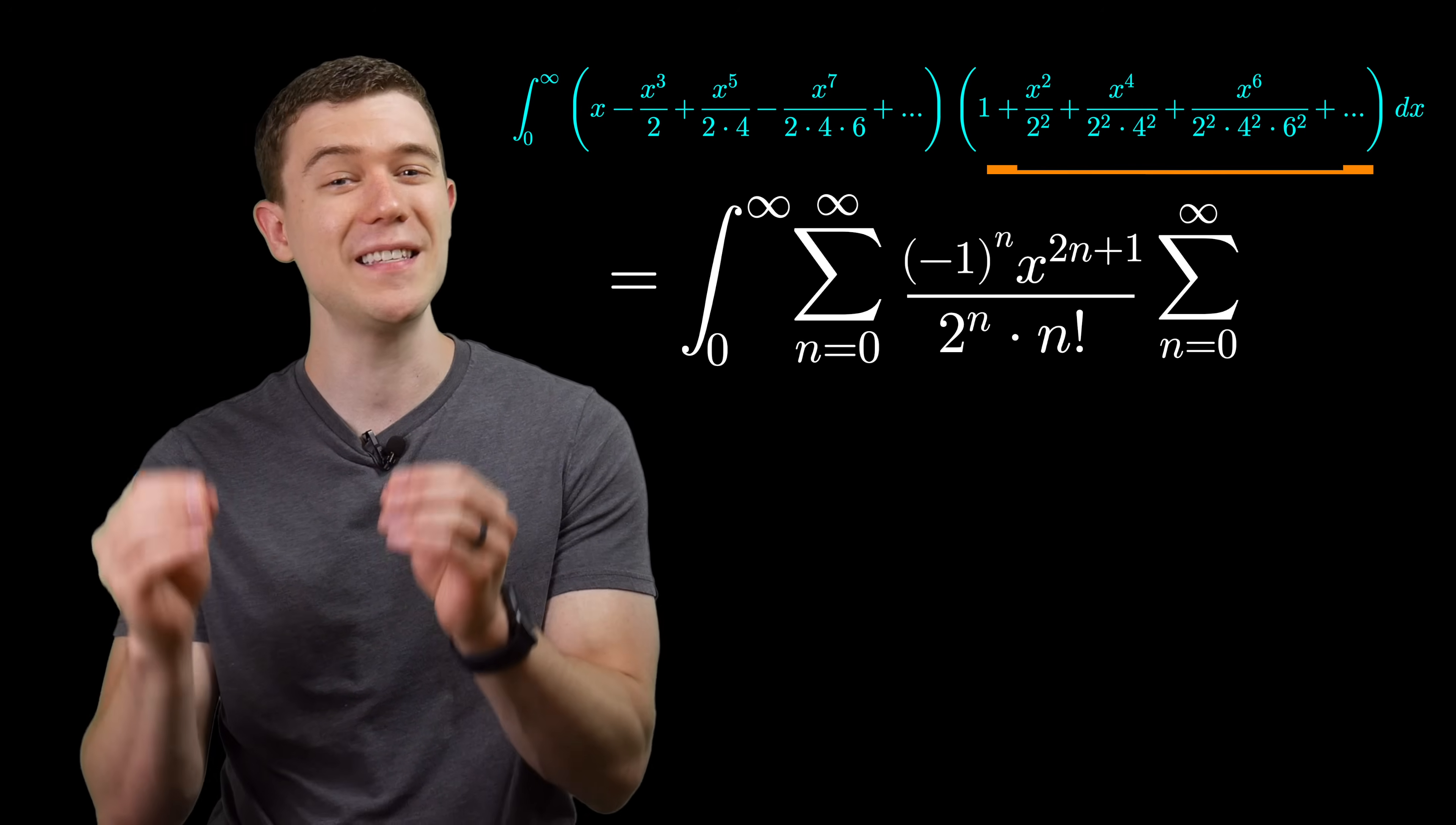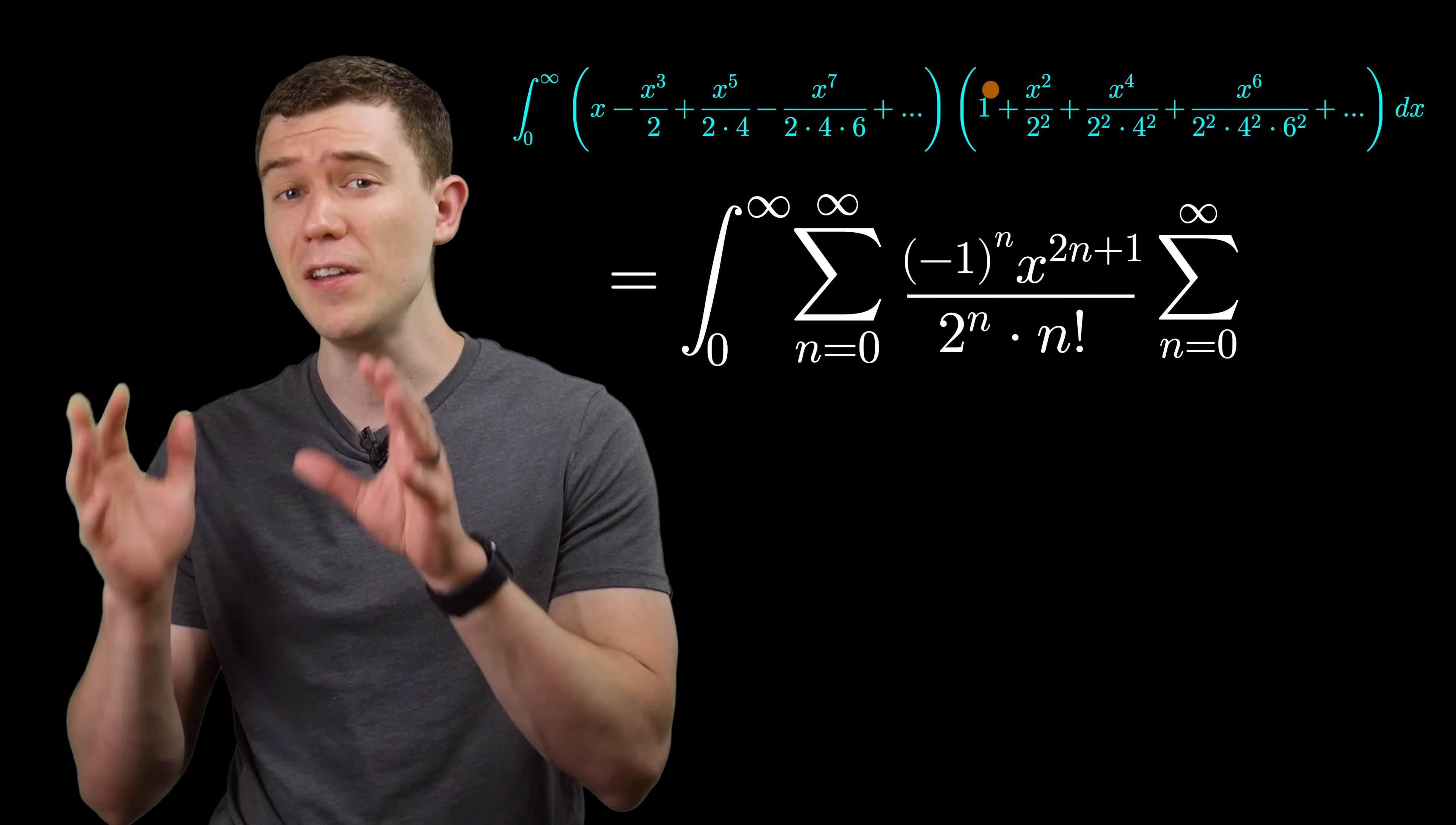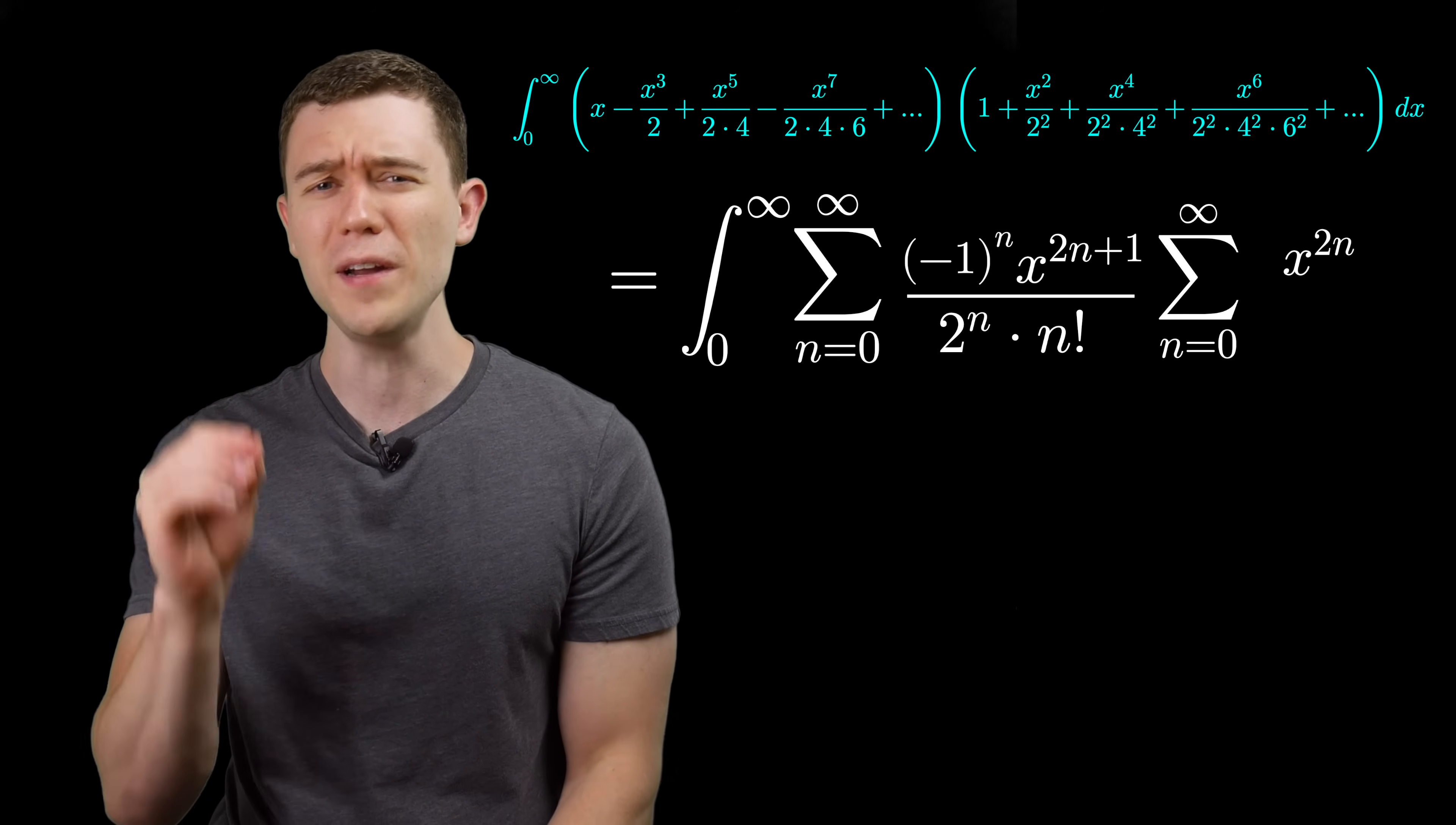That second sum is similar and follows a similar trick. Here, it's non-alternating. We don't have to worry about negative 1 to the n. We have even powers of x's. So if we're starting at n equals 0 for our sum, let's just make x to the 2n. That'll take care of those powers of x's. But again, what about the denominator?